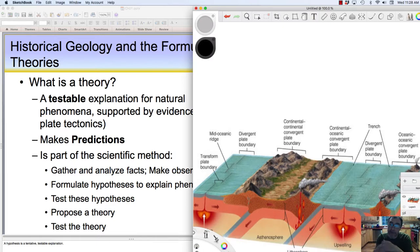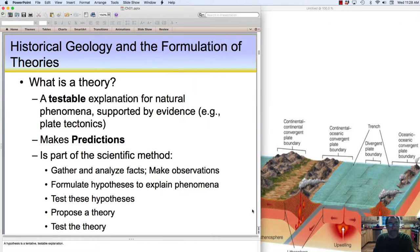And sure enough, that's what we see. We see volcanoes and new seafloor forming at the ridge, and then as we go farther from the ridge, we see that the seafloor is getting older and older the farther away you get from this mid-oceanic ridge. So that's a little bit about the scientific method.